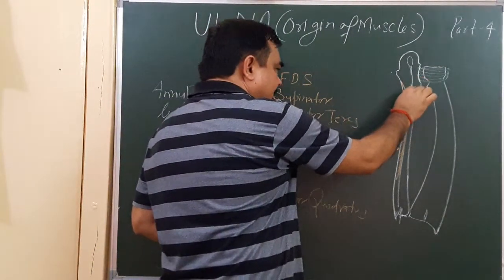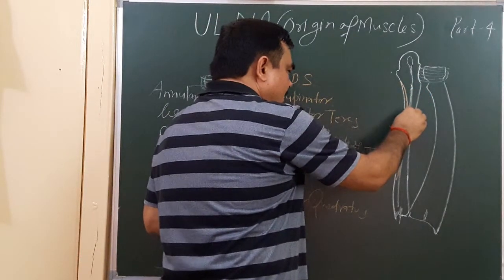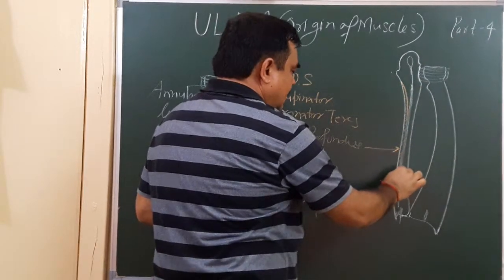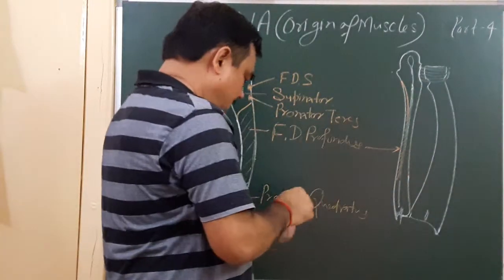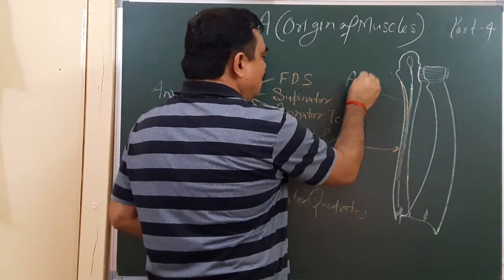This is the posterior border, and this posterior border gives attachment to an aponeurosis. Here one aponeurosis is attached.